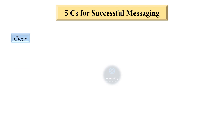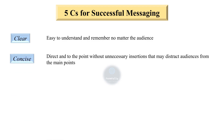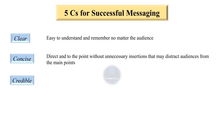The first C is Clear — easy to understand and remember no matter the audience. The second C is Concise: direct and to the point without unnecessary insertions that may distract audiences from the main point.